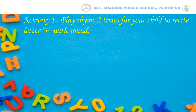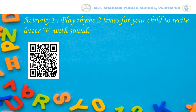So kids, let us do our first activity: play the rhyme 2 times for your child to recite Letter F with sound. Dear parent, scan the given QR code to play the rhyme and help your child to repeat the letter sound.